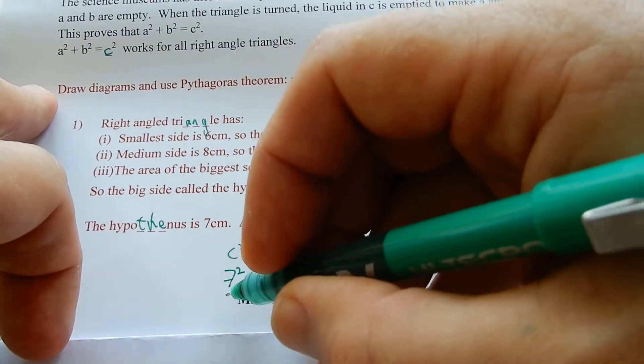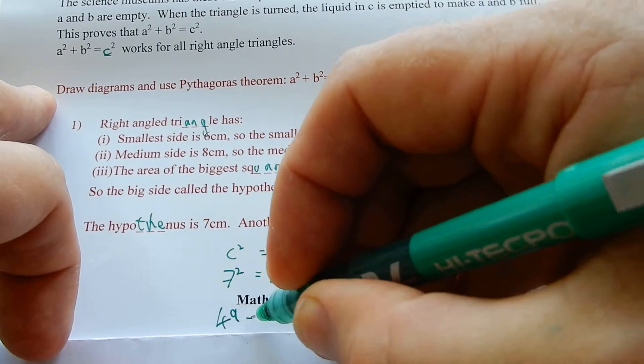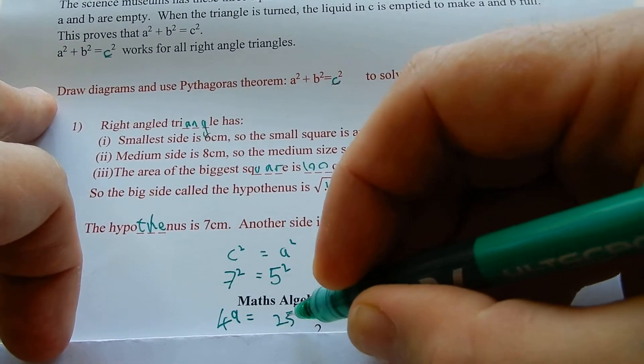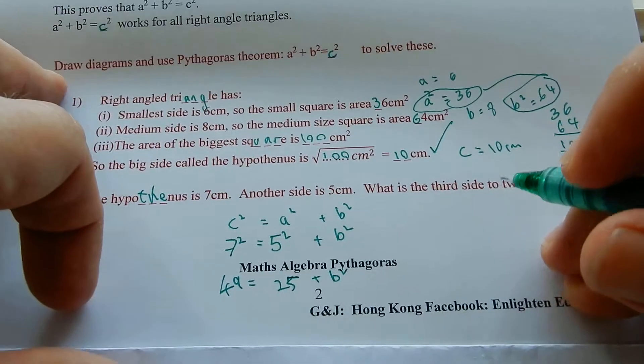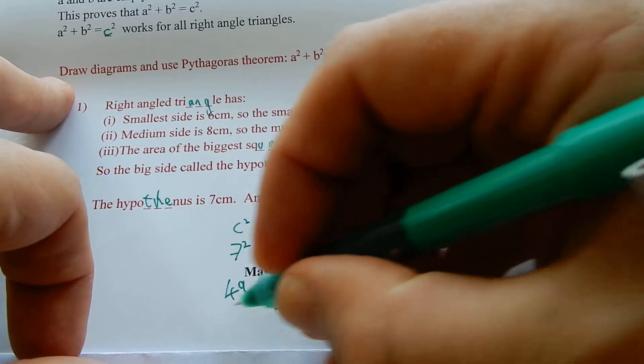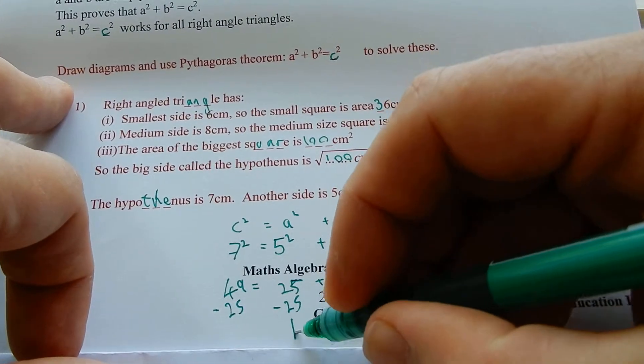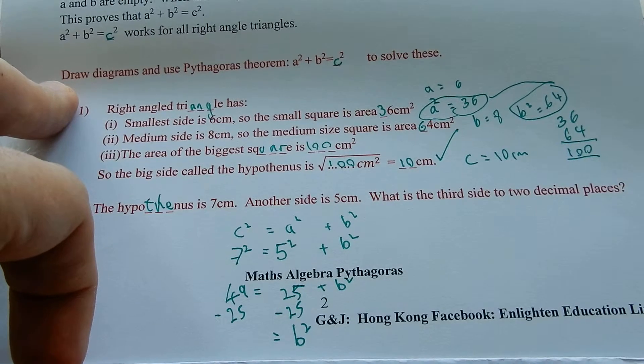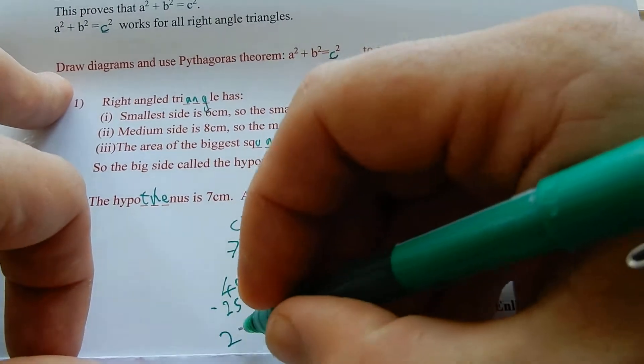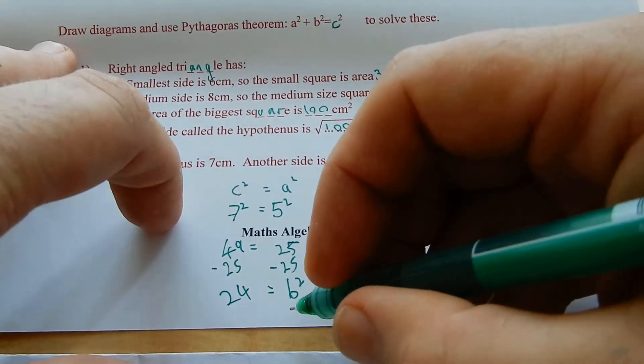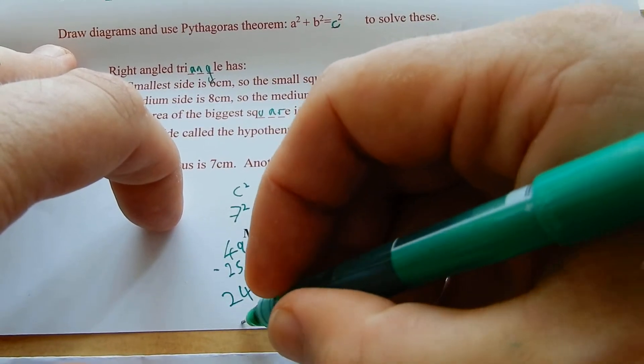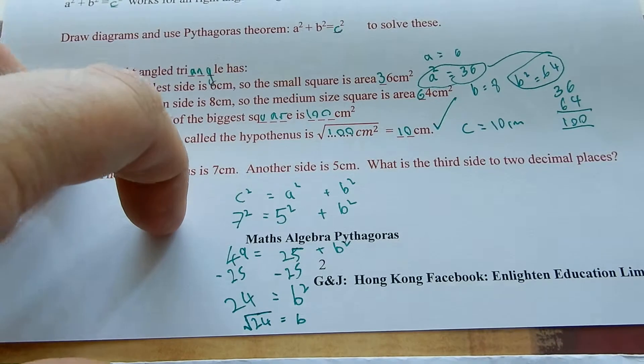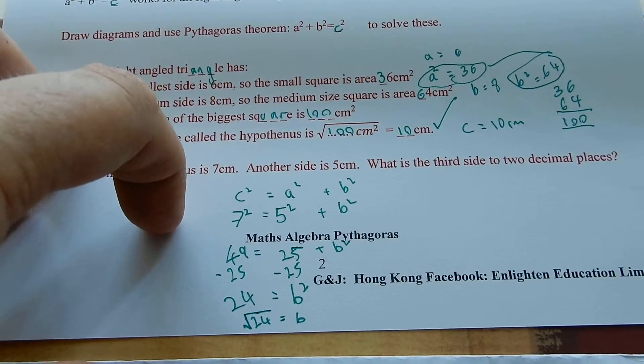Take, all right. Seven sevens are 49. Five fives are 25 plus B squared. Make that a five, Gary. Right, take away 25 from both sides. So, we've got B squared equals 40 minus 25 is 24. So, then you need a calculator. Square root both sides. B is the square root of 24. And that's going to be slightly less than five.